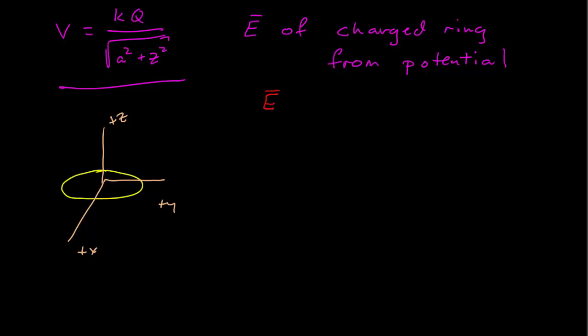So the electric field is given by the negative gradient of the potential. We have to be a little careful about this.